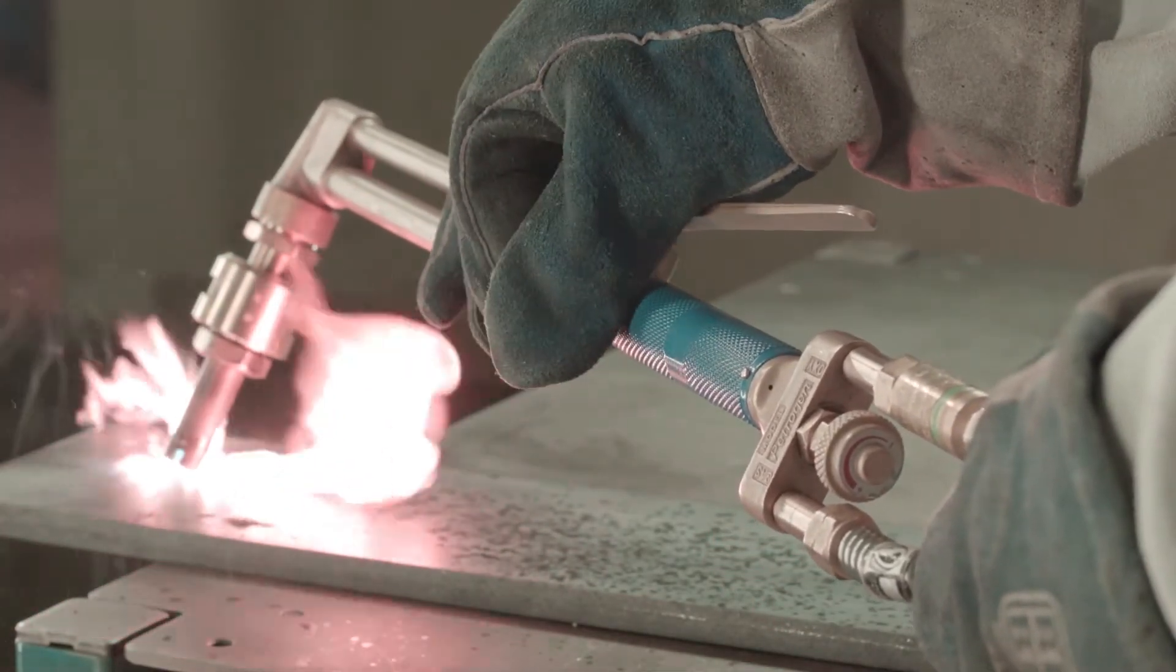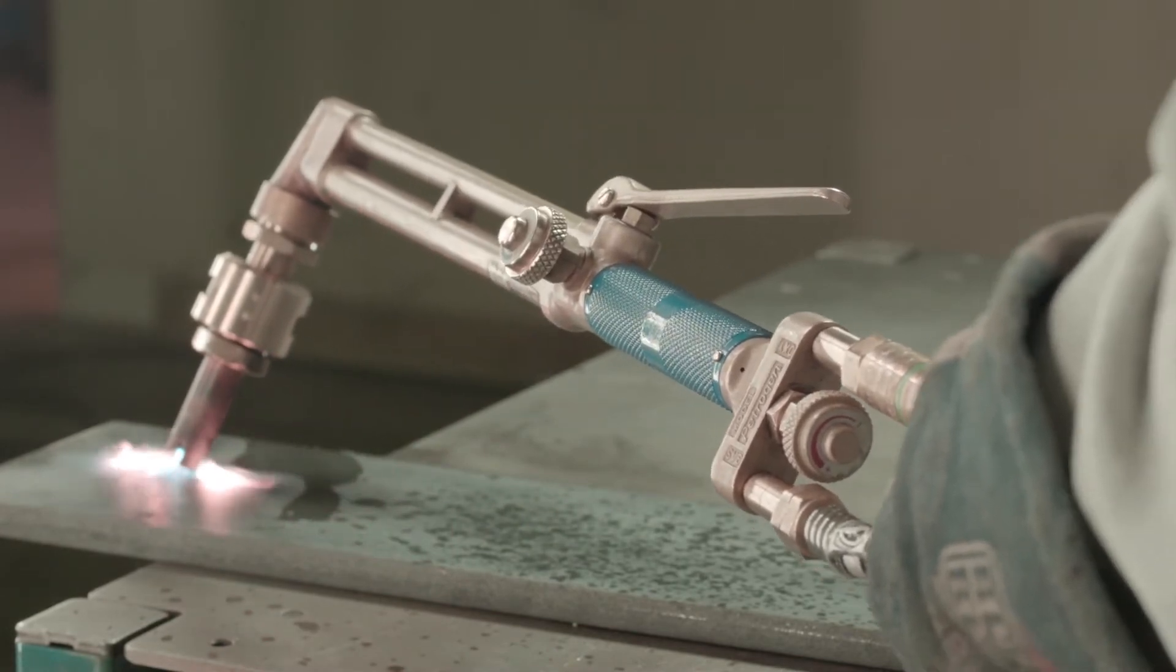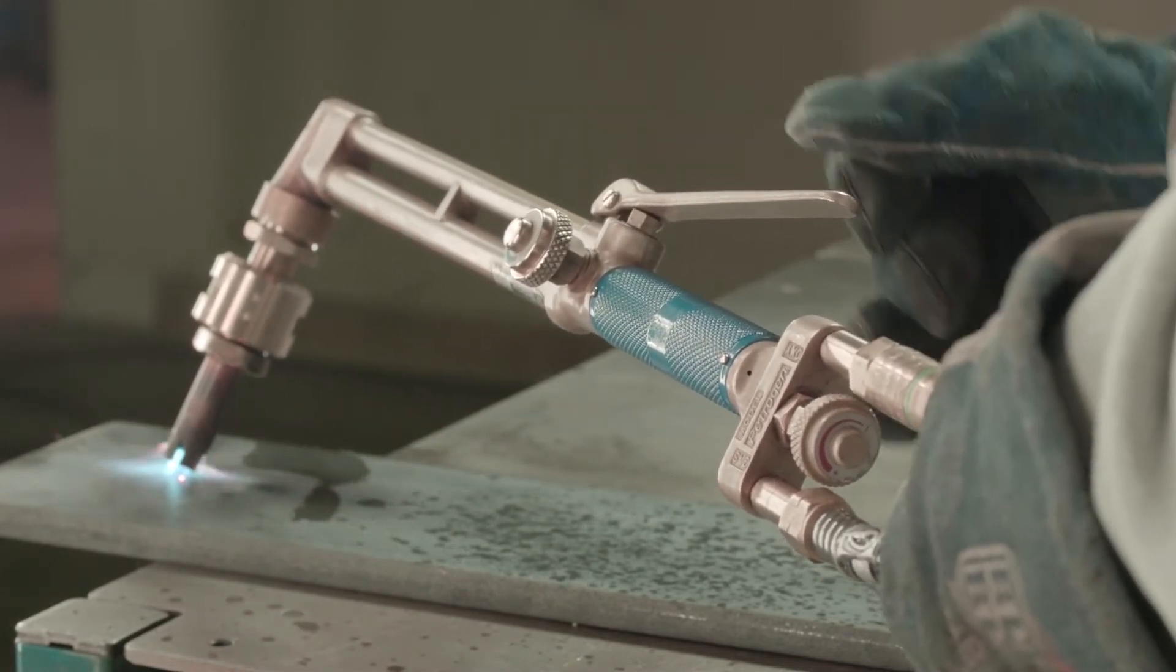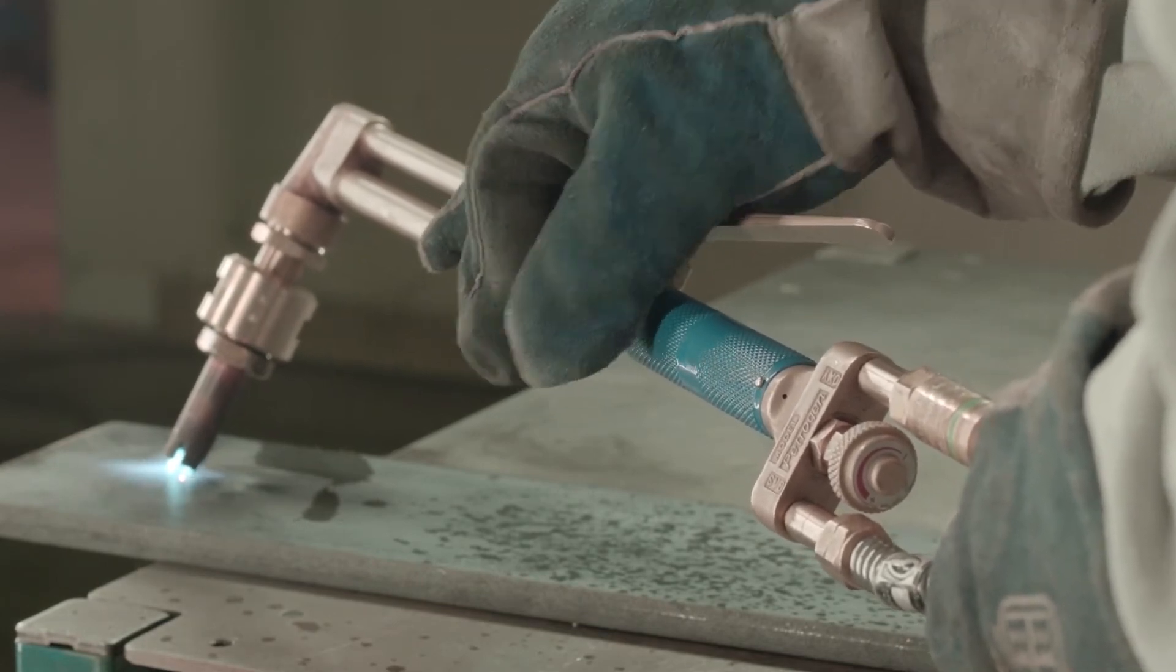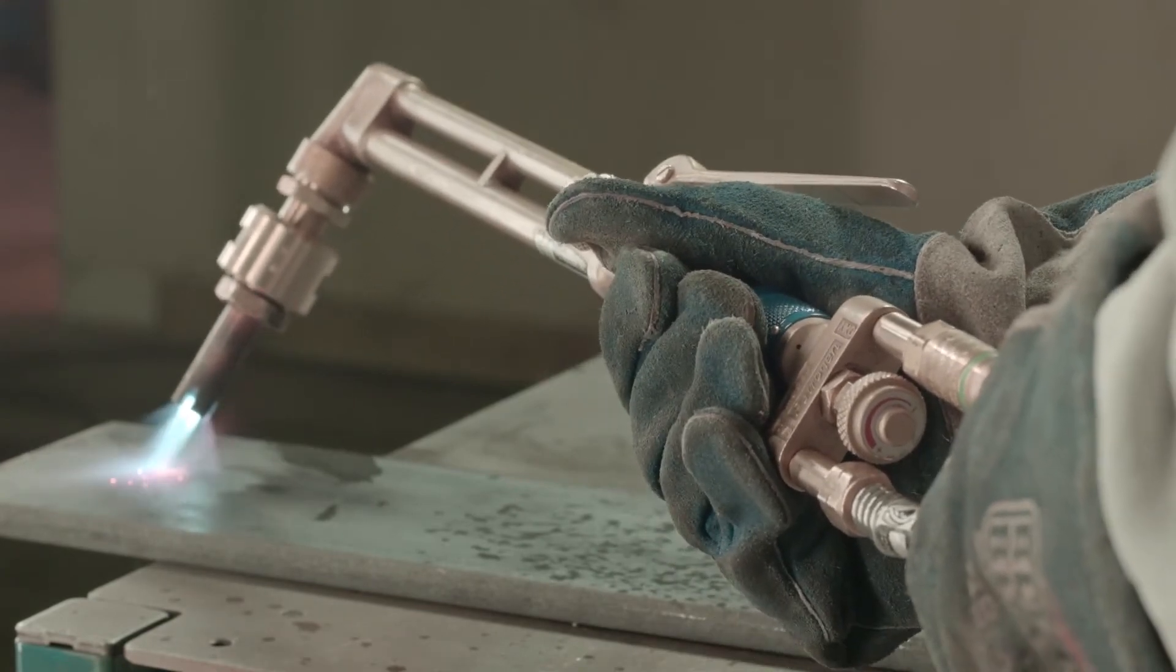Turn on the oxygen to one full turn until the yellow flame has disappeared. Then turn the preheat oxygen knob back to one half turn. If necessary, make your final adjustment with fuel.